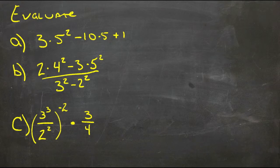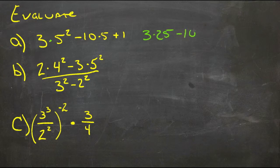So our first example here we have three times—so the multiplication is going to have to wait because we have five to the second power, and then subtract ten times five and add one after we're done. So the very first thing we'll do is this five squared, that'll give us five to the second power is twenty-five, so we have three times twenty-five minus ten times five plus one.